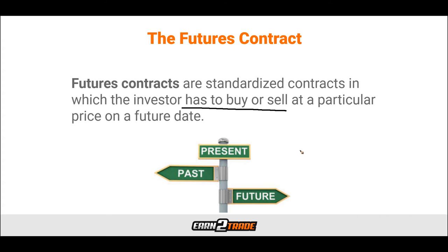Most investors consider futures contracts safer since they can use the margin they post to settle any losses they might incur. It does lack flexibility, however, because each aspect of the contract is defined. An investor cannot choose any random underlying asset, price, or date for a futures contract — it is predetermined. However, you can settle a futures contract at an earlier date by taking a counter position because of the standardization.